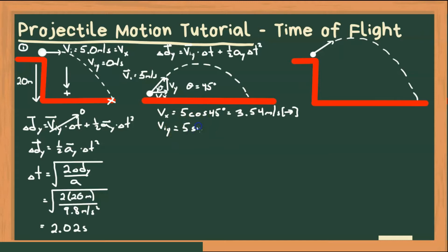But our y velocity will change due to the acceleration due to gravity. And it'll be 5 sine 45. And since 45 is the same for sine and cosine, we will also get 3.54 meters per second. But in this case, it's going to be up.